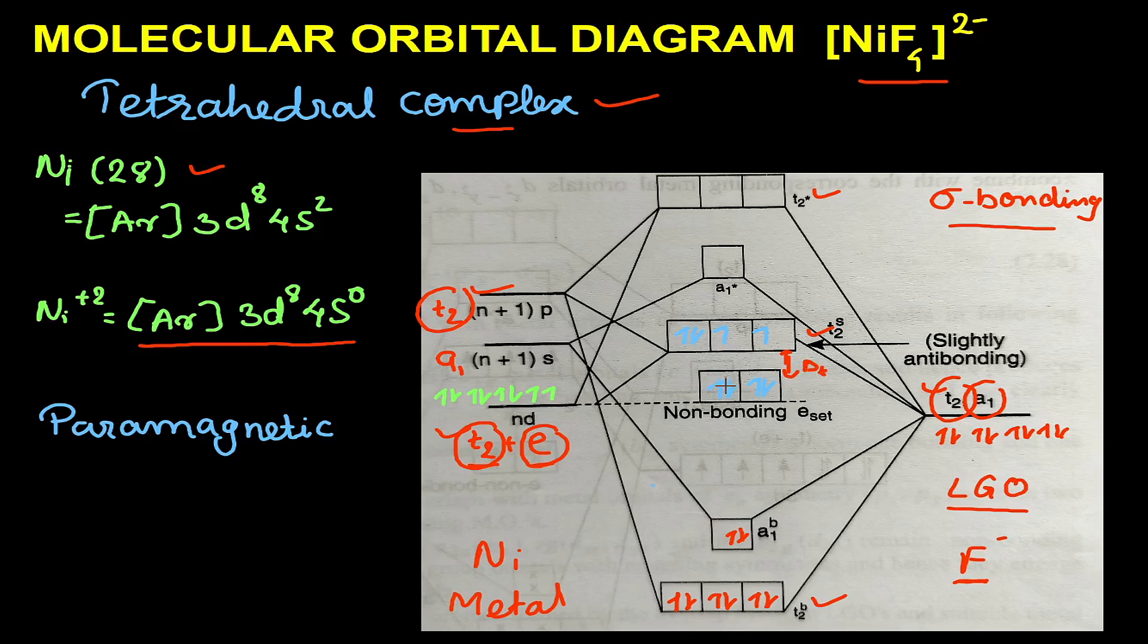One electron each will go in eₐ, then the third, fourth, and fifth electrons will go in t₂. The sixth electron will again come in e, seventh in e, and the eighth will go in t₂. This is how the electrons are arranged. There are two unpaired electrons, so the complex is paramagnetic.